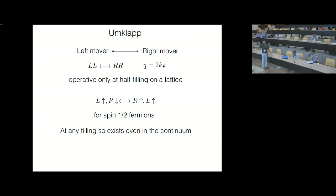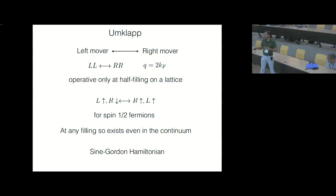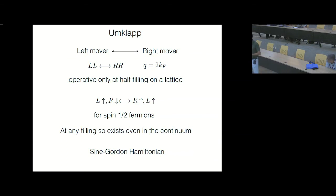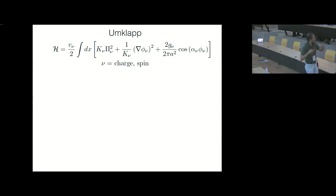When you want to include the effect of these processes, the Hamiltonian I wrote down has to be modified to something called the sine-Gordon Hamiltonian — you end up picking up an extra term like this. I'm looking at a treatment where I can have both charge and spin, and the charge and spin degrees of freedom separate — that's spin-charge separation in one dimension.